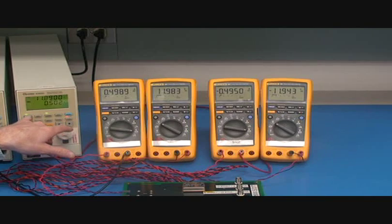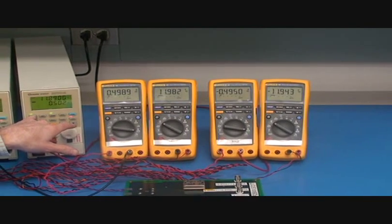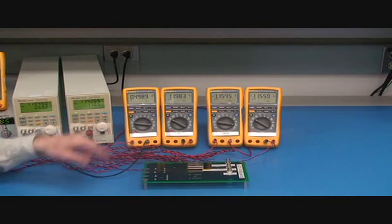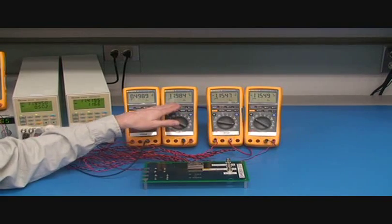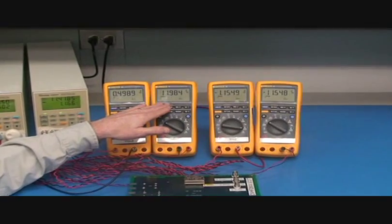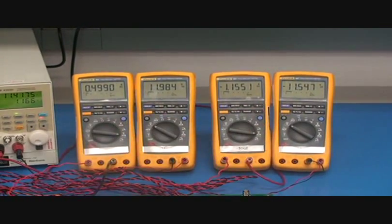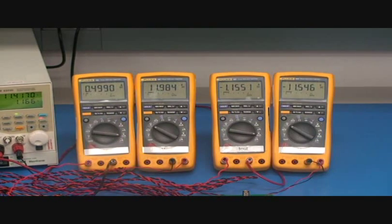So first, we will take the negative load to 70%. Positive load will remain at 30%. And you can see that the positive voltage remains 11.98. The negative voltage drops down to minus 11.5 volts.